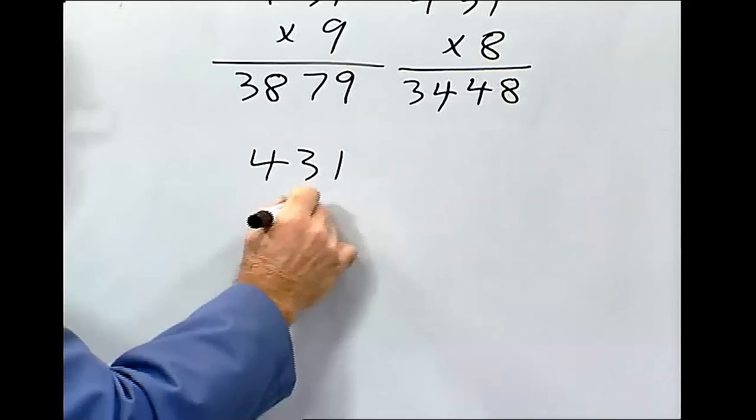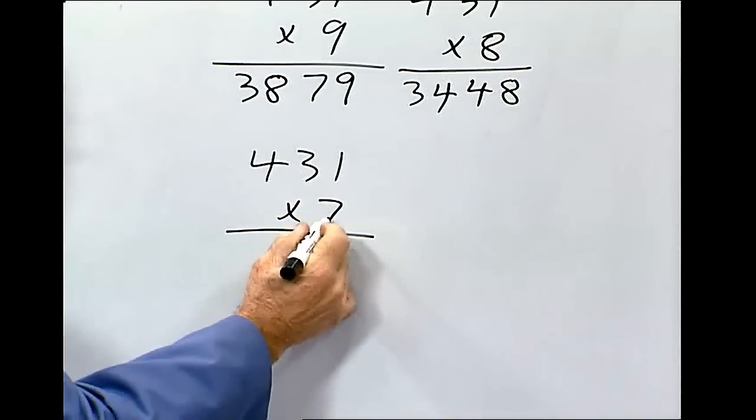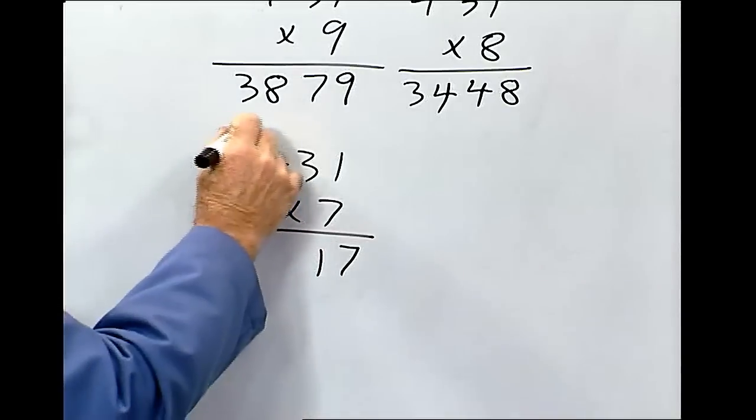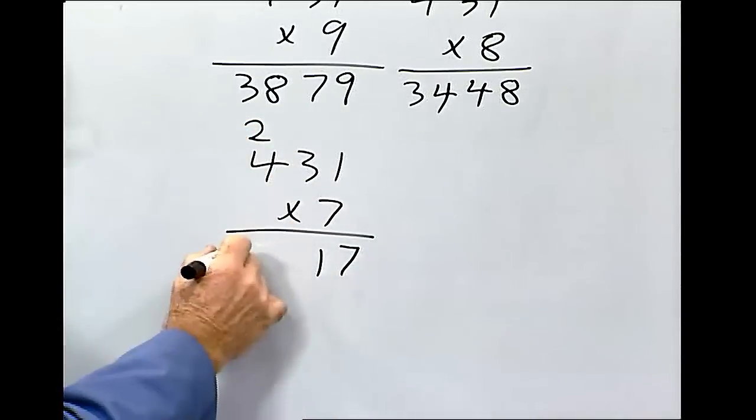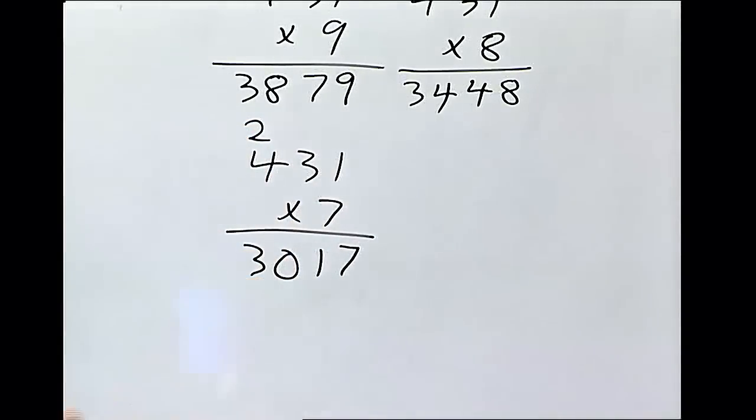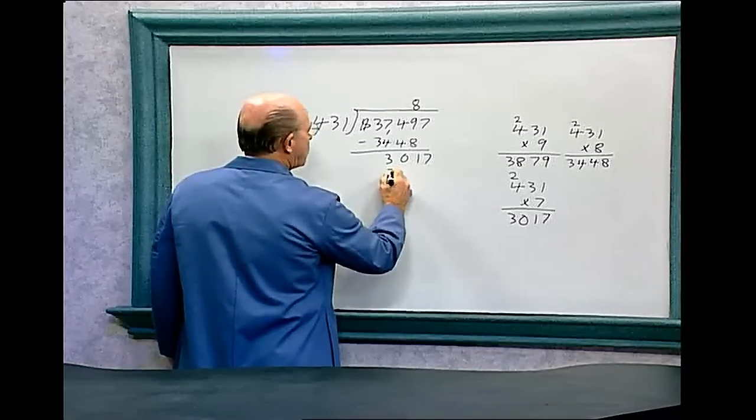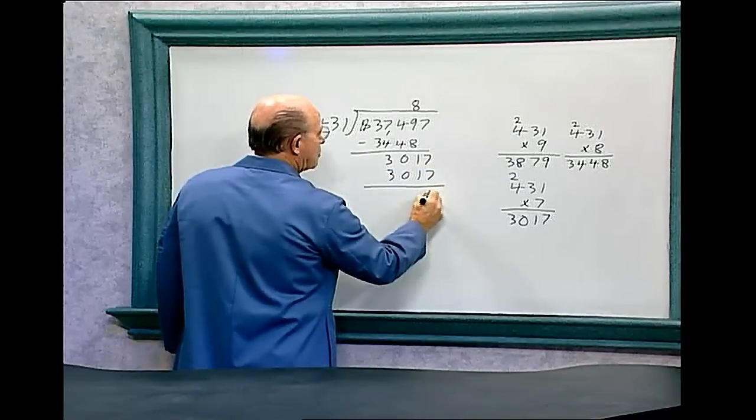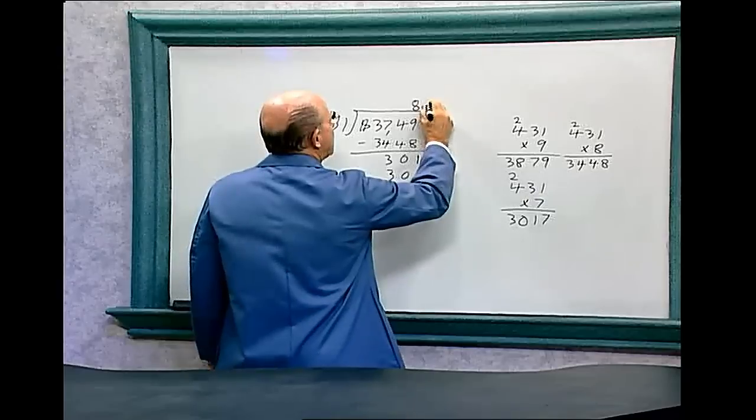431 times 7: 7 times 1 is 7, 7 times 3 is 21, 7 times 4 is 28, plus 2 is 30. We see that number is the same: 3,017. That equals 0. We put the 7 over here.